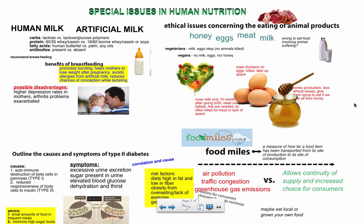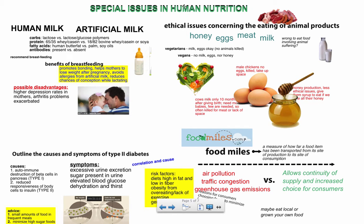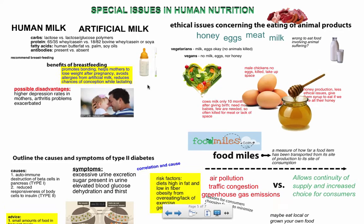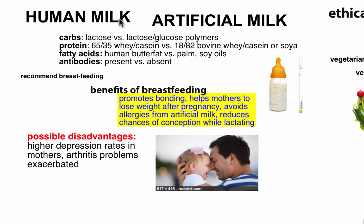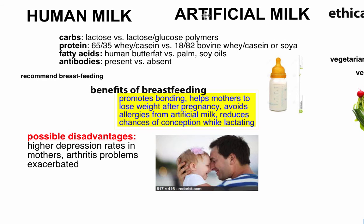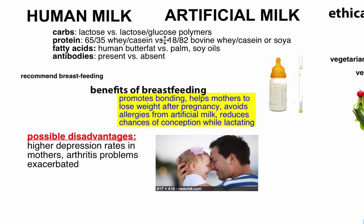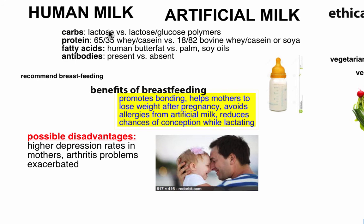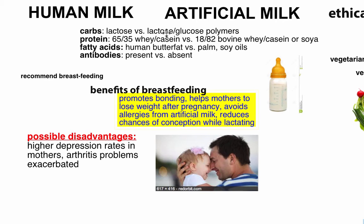We are going to take a look at some special issues in human nutrition, starting with breast milk and the importance of breast milk versus artificial milk. If you take a look over here, we're going to make a little comparison chart — human milk versus artificial milk — and then some of the benefits of breastfeeding and possible disadvantages. When looking at carbs, human milk contains mainly lactose as the source of energy, but artificial milk can contain lactose and other glucose polymers as well.